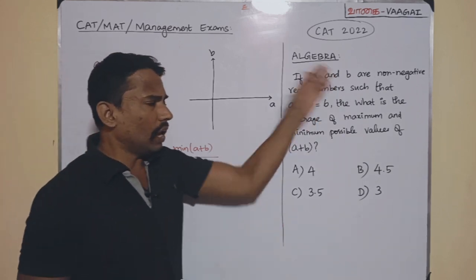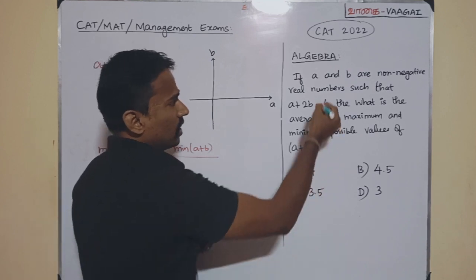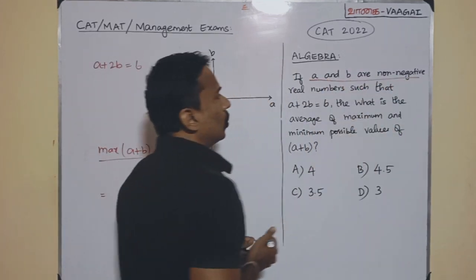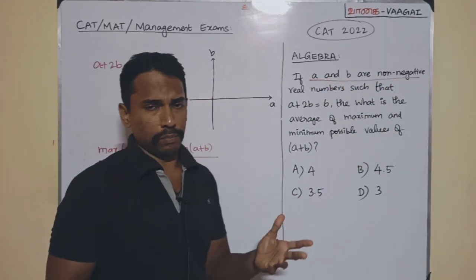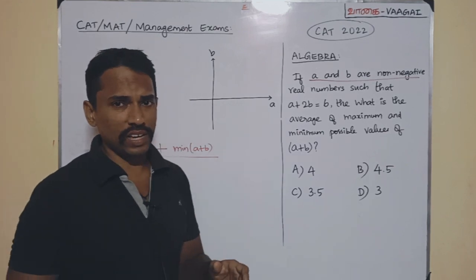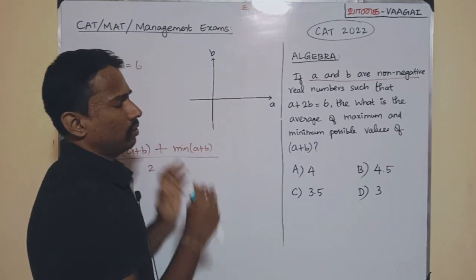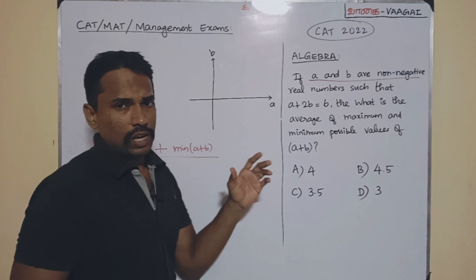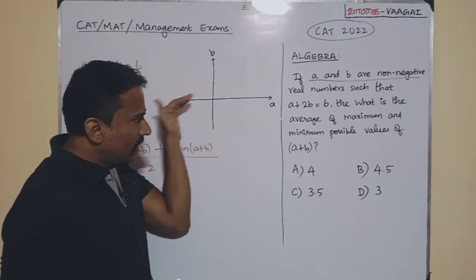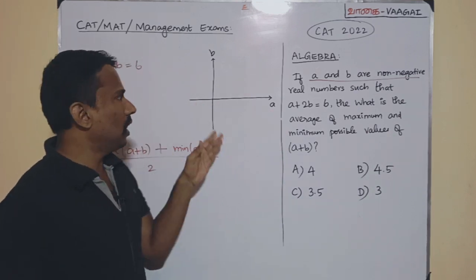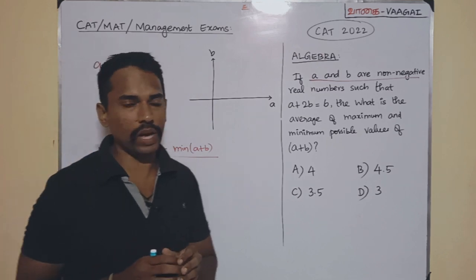Now, fine. At the beginning of the question itself, it is very clearly given that A and B are two non-negative real numbers. So, that means definitely, if we come to plot the axis, I am going to take this x-axis as A's representation and y-axis as B's representation.